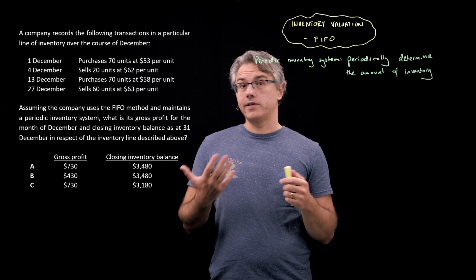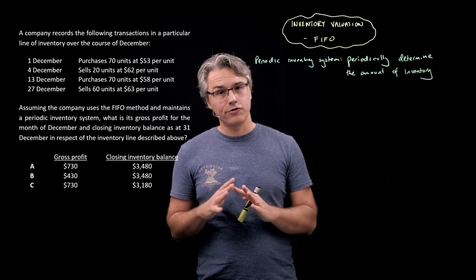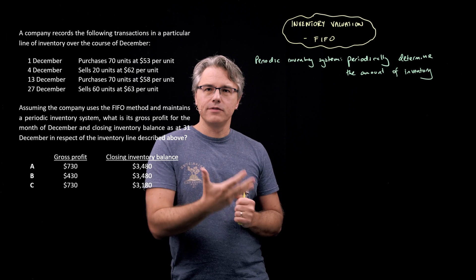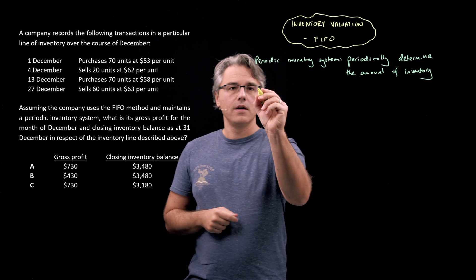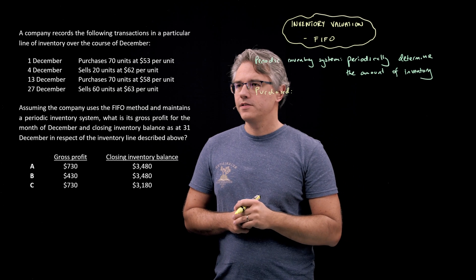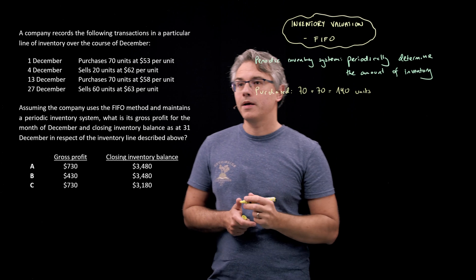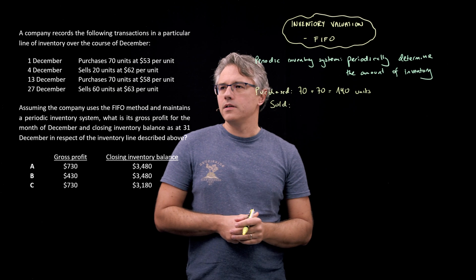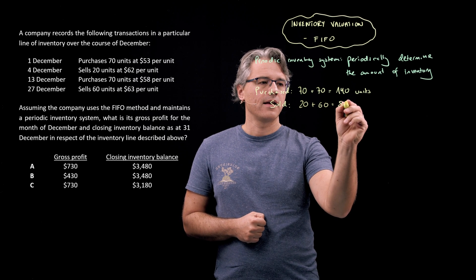There is more than one way to solve this question. I'm going to show you the way proposed by the curriculum, which will ensure you get this right, but it's fine in the exam to make certain shortcuts. The official approach: first, count the number of units purchased and sold. Purchased, we had 70 units from the 1st of December and another 70 units from the 13th of December — 70 plus 70 gives 140 units. For units sold, 20 units were sold on the 4th of December and another 60 were sold later in the month — 20 plus 60 gives 80 units.